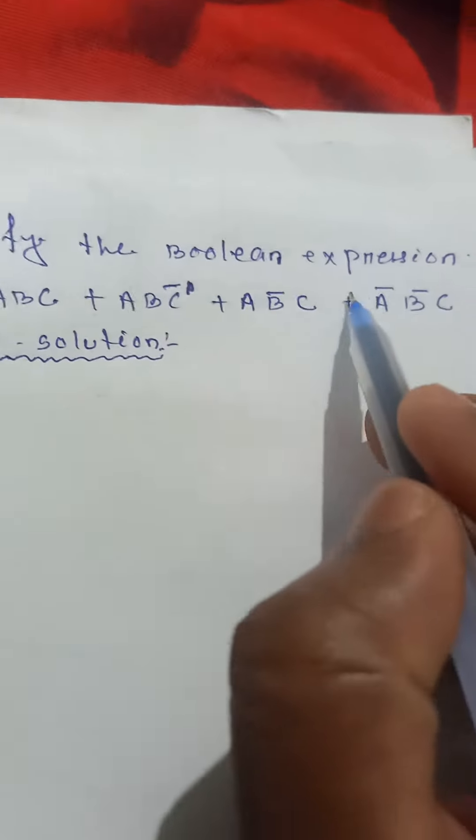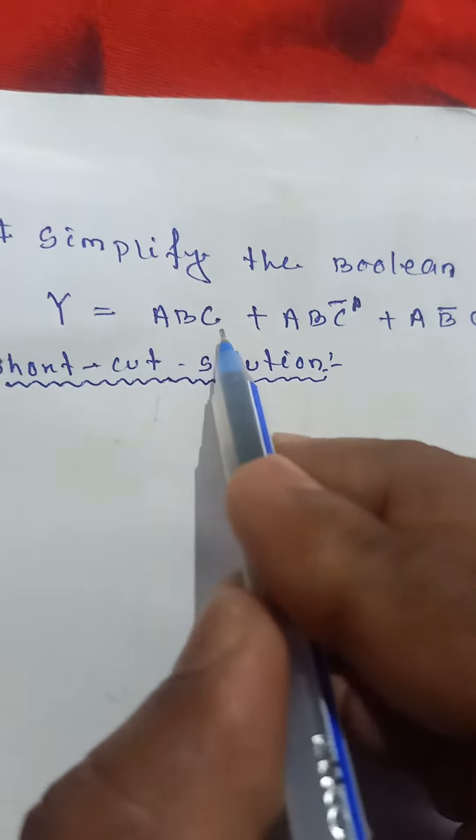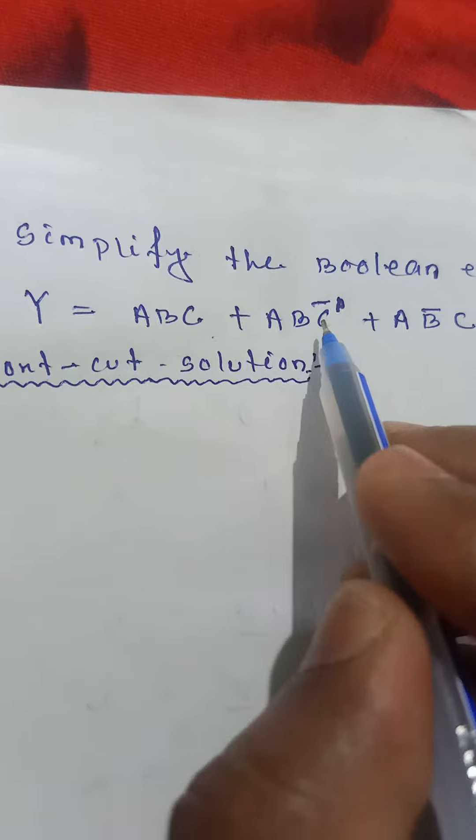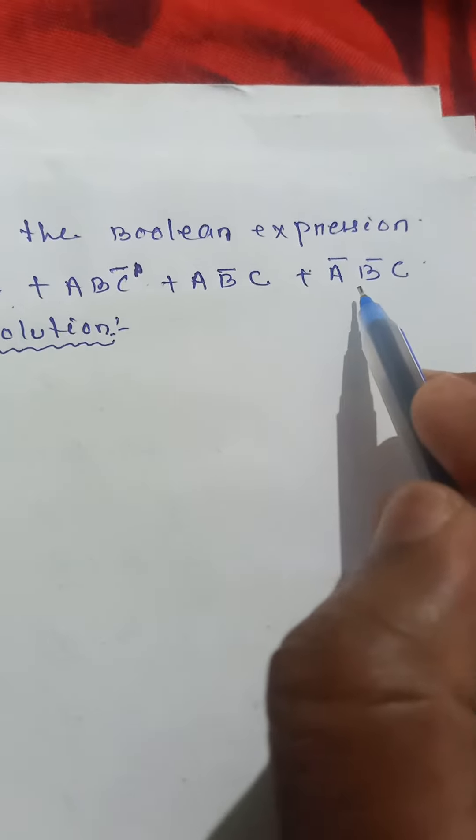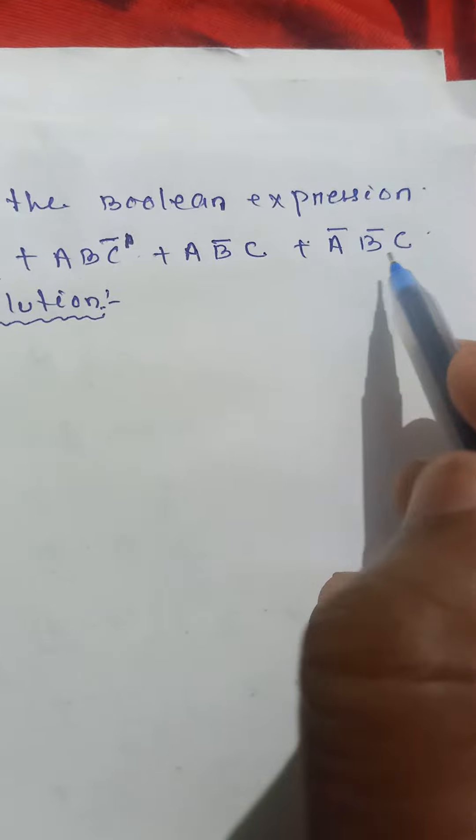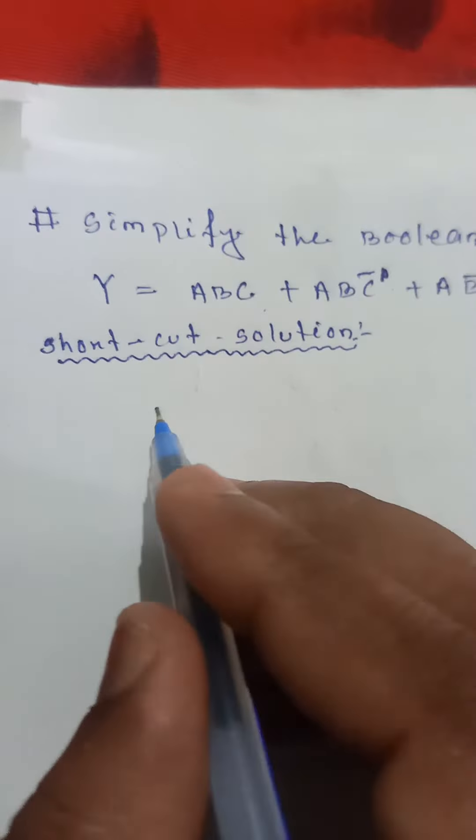So, simplify the Boolean expression Y equals ABC plus ABC bar plus AB bar C plus A bar B bar C. Okay, now the shortcut solution is: